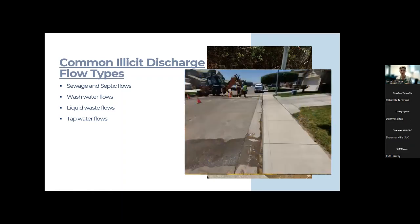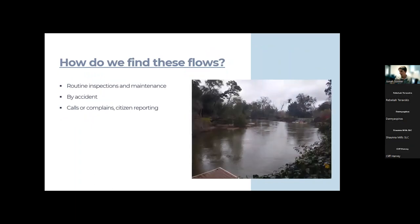Tap water flows can be from leaks or losses during drinking water distribution. Clean water carrying sediment into the street during water line maintenance is an example — they needed BMPs to protect the storm drain so sediment wasn't entering with the flow.